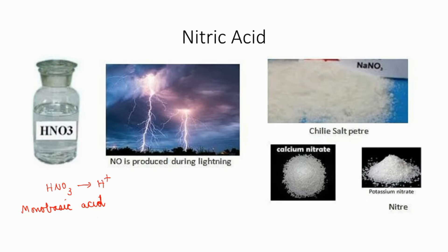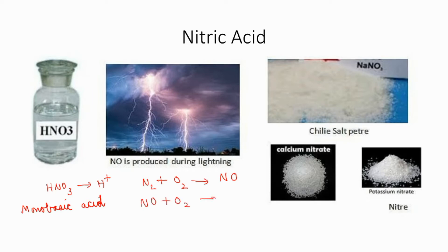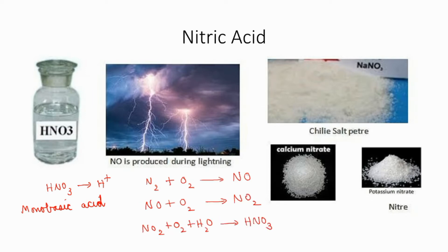Is it possible to see nitric acid somewhere naturally? Yes. Plenty of nitrogen and oxygen are present in the atmosphere, but they won't react with each other because a very high temperature is required. This temperature is produced at the time of a thunderbolt. At that temperature, nitrogen and oxygen react to form nitric oxide. Nitric oxide then combines with oxygen to form nitrogen dioxide, which then combines with oxygen and water to form nitric acid. This acid, being soluble in water, comes down to the soil in the form of rain — we call it acid rain.